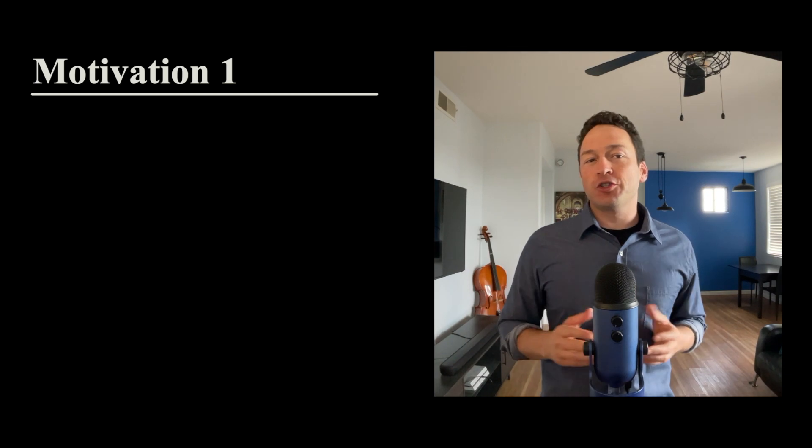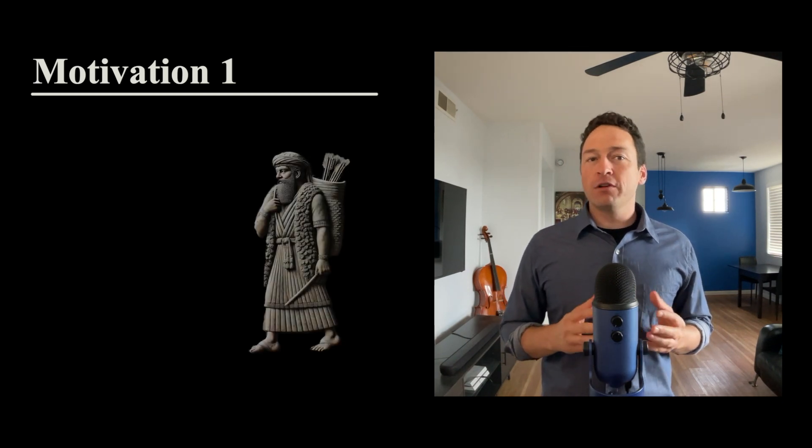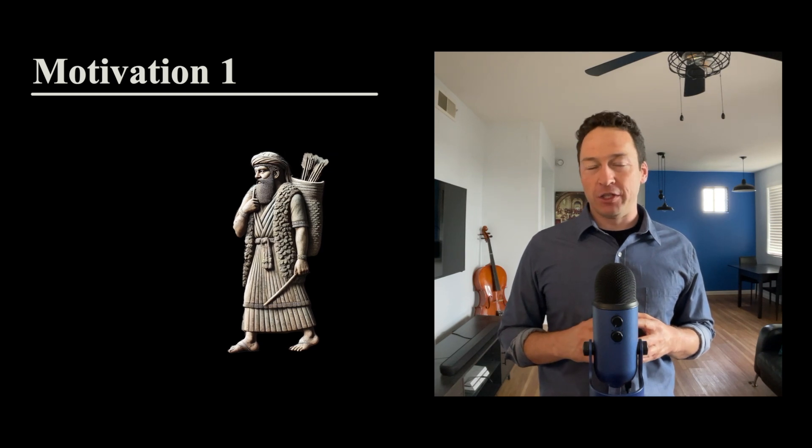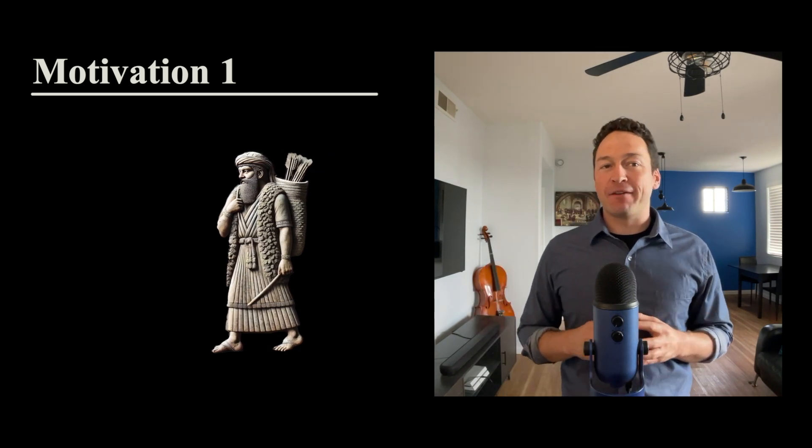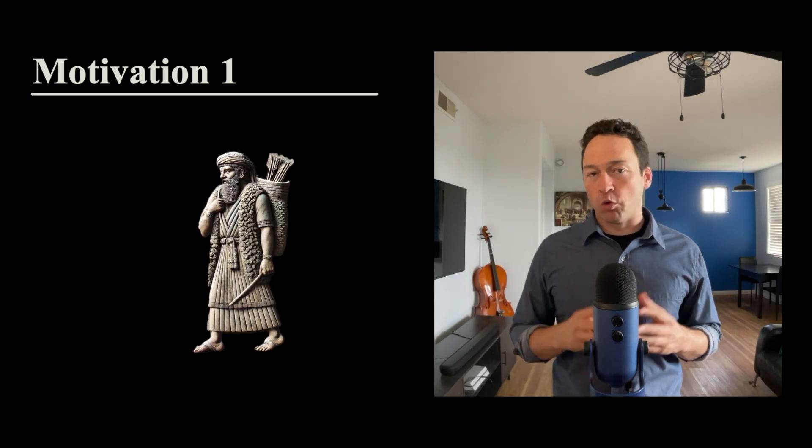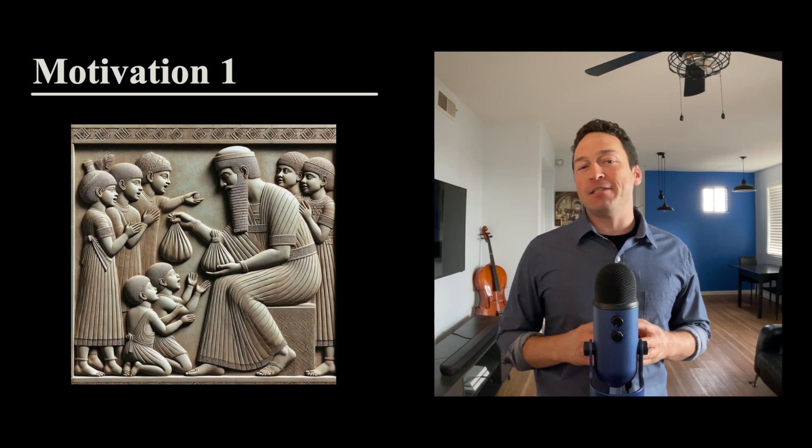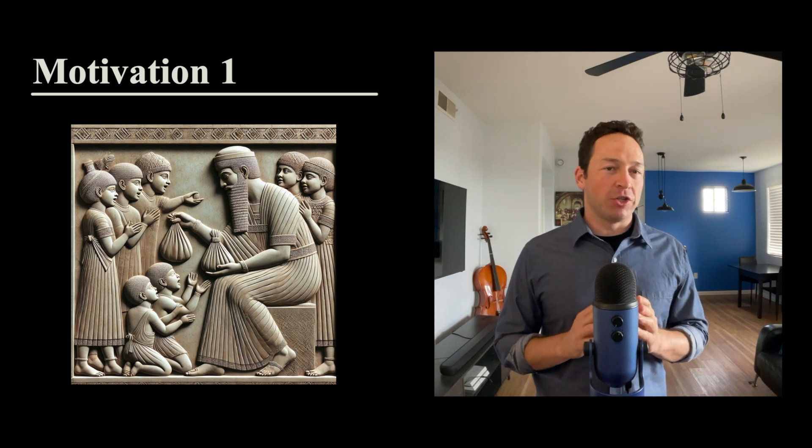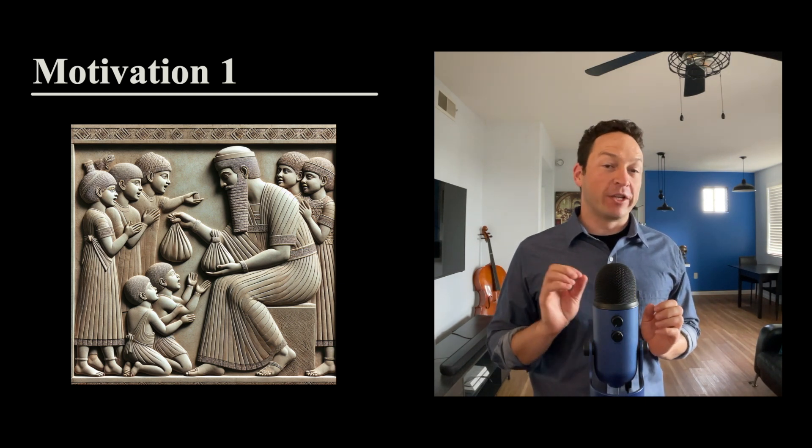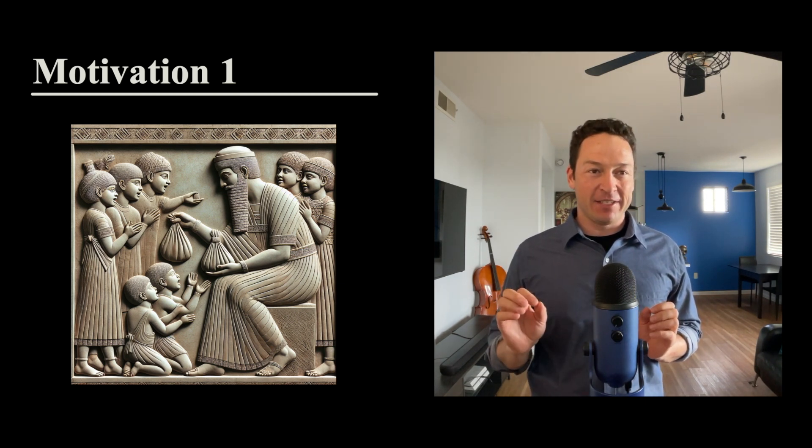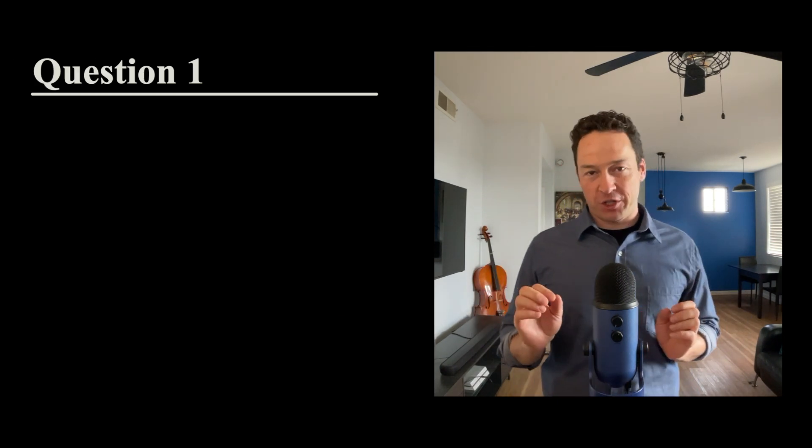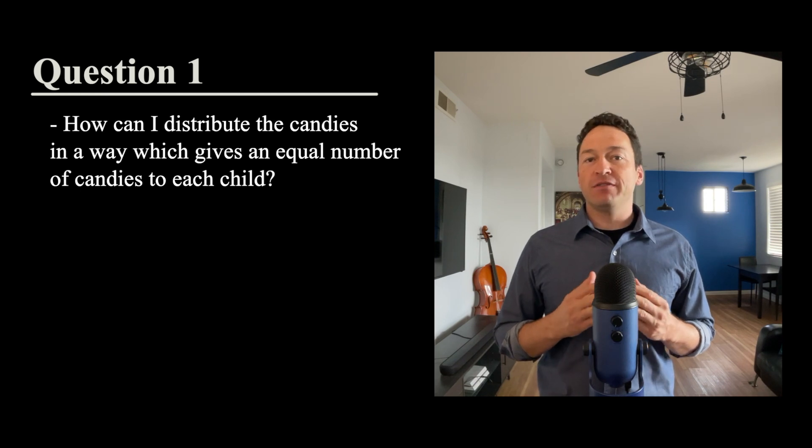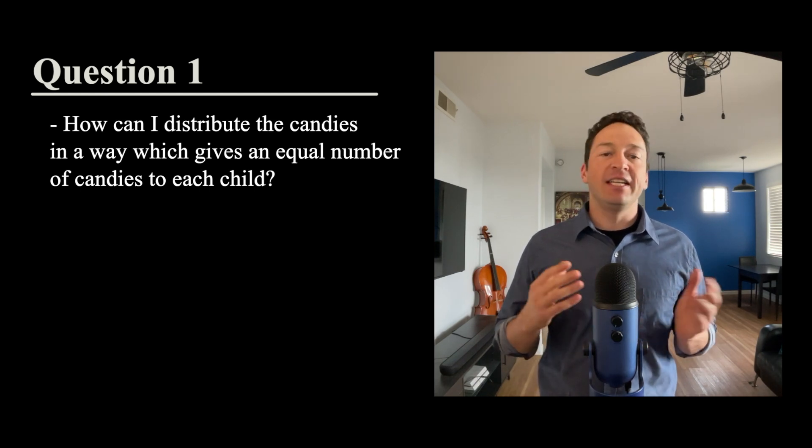Motivation one. We'll start our story with a flashback. Earlier in his life, Rom lived in the woods with his wife and children. Sometimes, on his way back from a trip towards the town of Babel, he would bring a bag of candies back for his seven children. To be fair, he wanted to make sure that all of his children were getting the same number of candies. That led Rom to the following question: How can I distribute the candies in a way which gives an equal number of candies to each child?